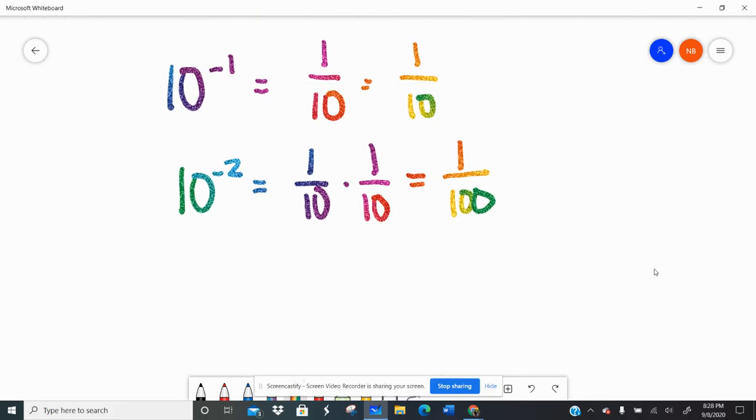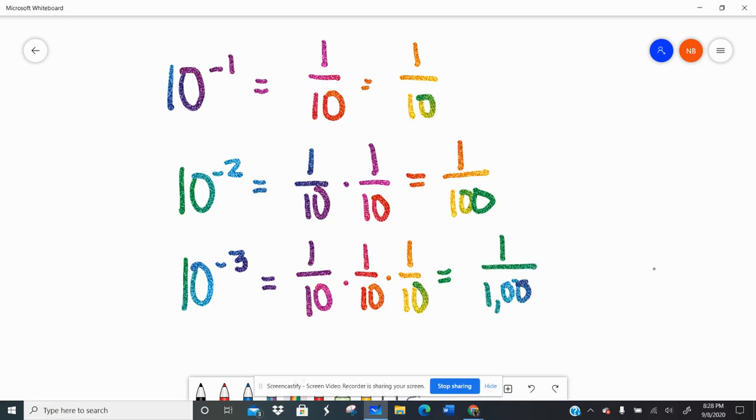Let's move this down because I'm writing so big. 10 to the negative 3 is 1 tenth times 1 tenth times 1 tenth. Again, positive numbers, but little numbers, which is 1 over 1,000.